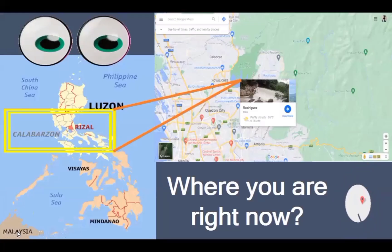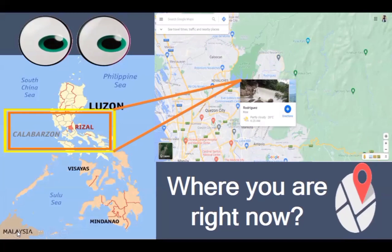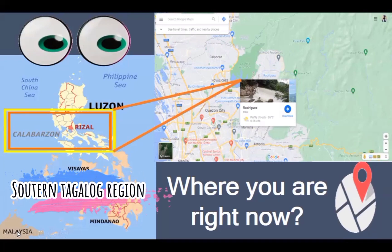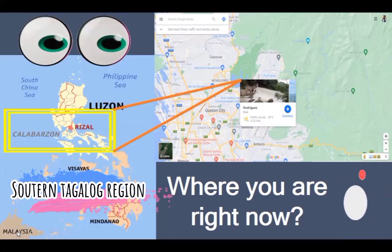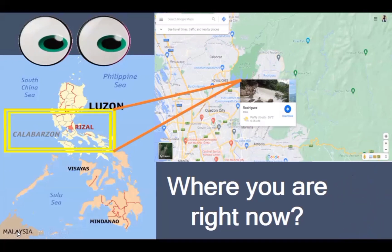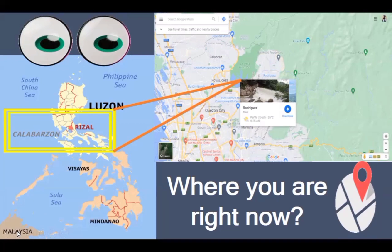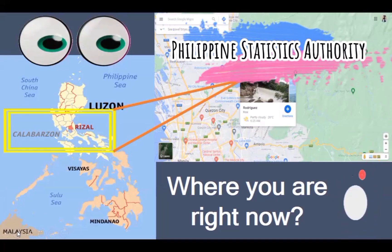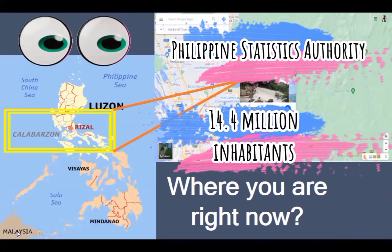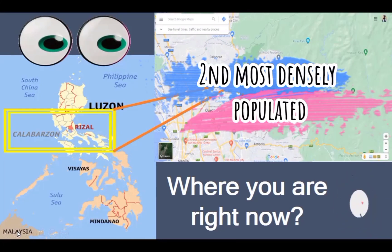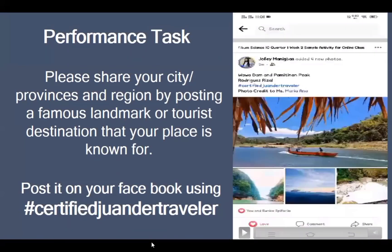Looking at the Philippine map, I am in Region 4A or Calabarzon. Calabarzon is formally known as the Southern Tagalog mainland. It is an administrative region designated as Region 4A, comprising five provinces: Cavite, Laguna, Batangas, Rizal, and Quezon. According to the Philippine Statistics Authority, there are over 14.4 million inhabitants in Calabarzon in 2020 — the second most densely populated after the National Capital Region. Can you also pinpoint where you are right now? Please share your city, province, and region by posting a famous landmark or tourist destination that your place is known for.